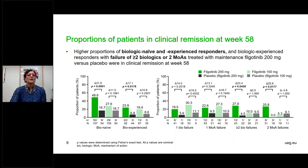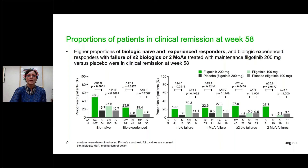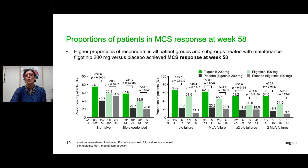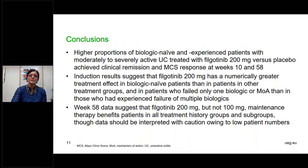In maintenance outcomes at week 58, higher proportions of biologic-naive and biologic-experienced patients treated with filgotinib 200 mg versus placebo were in clinical remission. Similarly, Mayo Clinic score response at week 58 was higher across all patient groups and subgroups treated with maintenance filgotinib 200 mg versus placebo.